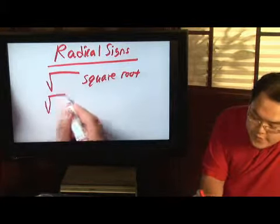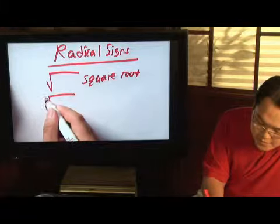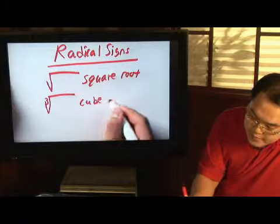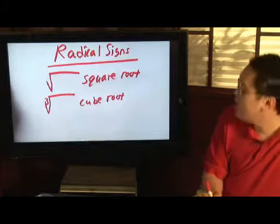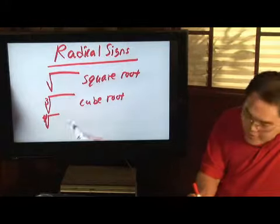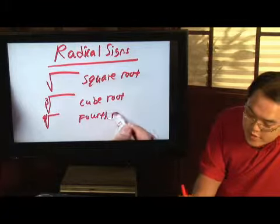If it's not a square root, they have to put a number on the inside. So for example, three means there's a cube root. If you have a four on the outside, that means it's a fourth root, and the pattern continues.